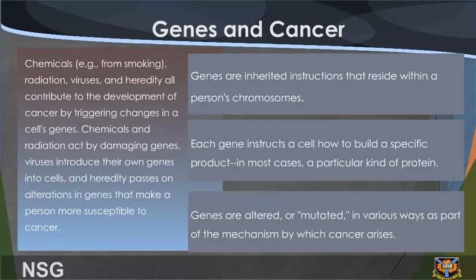Genes and Cancer. Chemicals, e.g. from smoking, radiation, viruses, and heredity all contribute to the development of cancer by triggering changes in the cell's genes. Chemicals and radiation act by damaging genes. Viruses introduce their own genes into cells. Heredity passes on alterations in genes that make a person more susceptible to cancer. Genes have inherited instructions that reside within a person's chromosomes. Each gene instructs a cell how to build a specific product, in most cases a particular kind of protein. Genes are altered or mutated in various ways as part of the mechanism by which cancer arises.